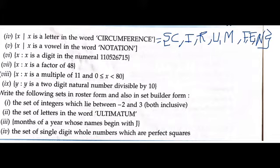Next is x where x is a vowel in the word NOTATION. In notation, which vowels are there? Let's see: O, A (A is also there), then I. Any other? No. So that's it, that's your answer.